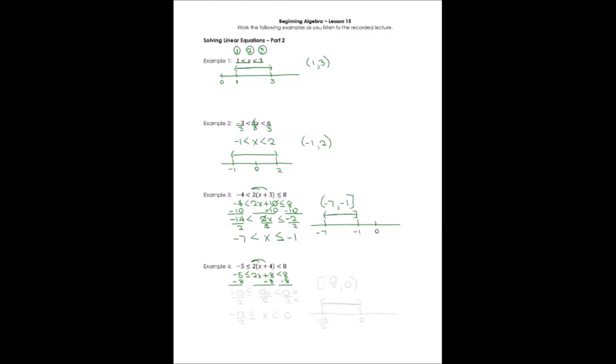We have negative eight minus eight. Well, both of those are negatives. Add them together and keep the sign, right? Less than or equal to 2x, which is less than eight minus eight, or zero.